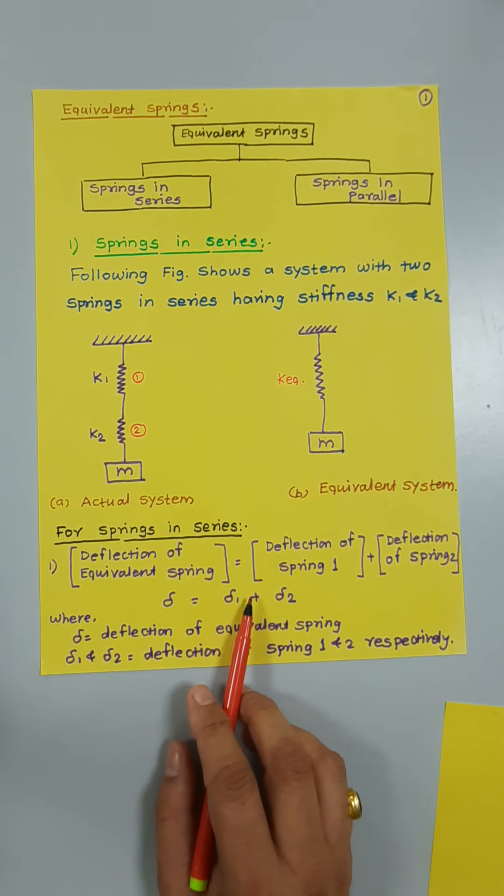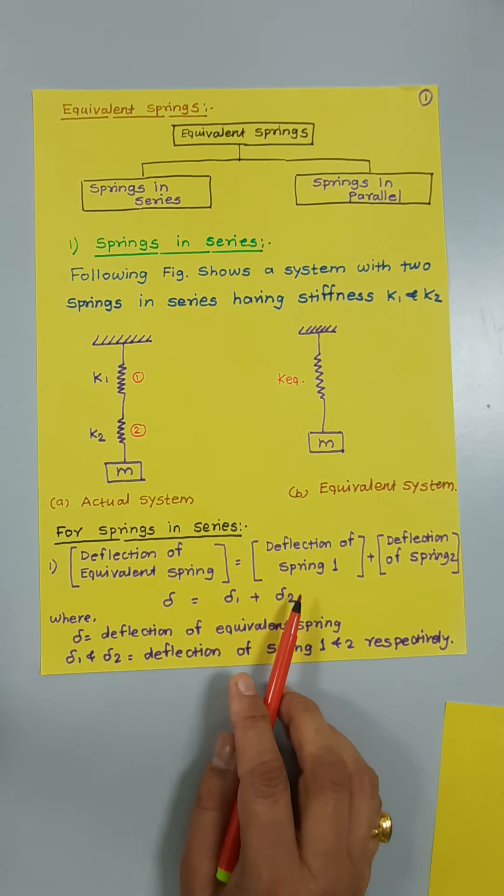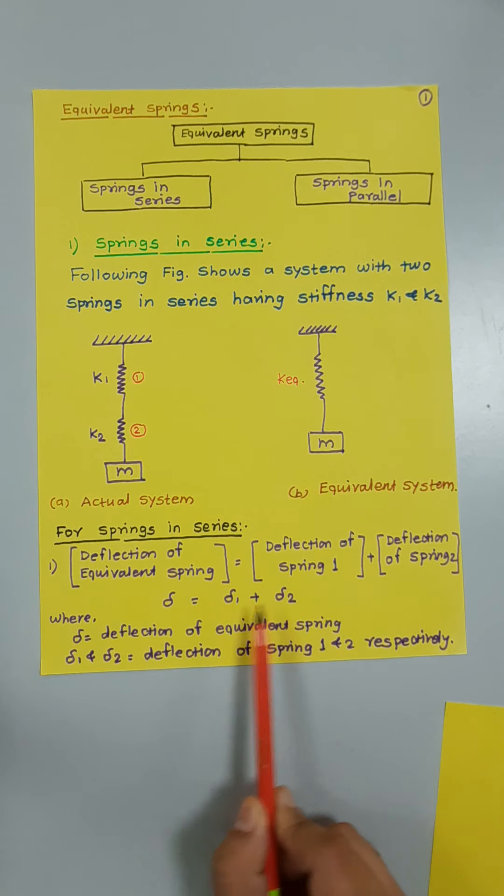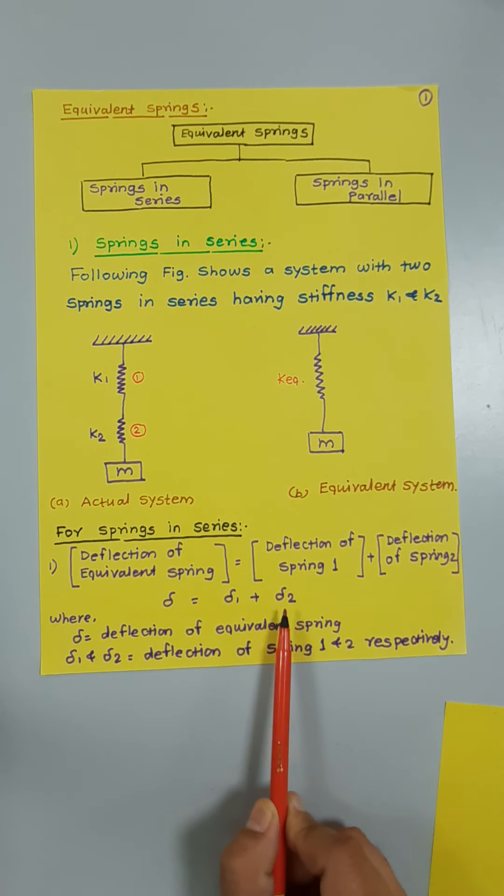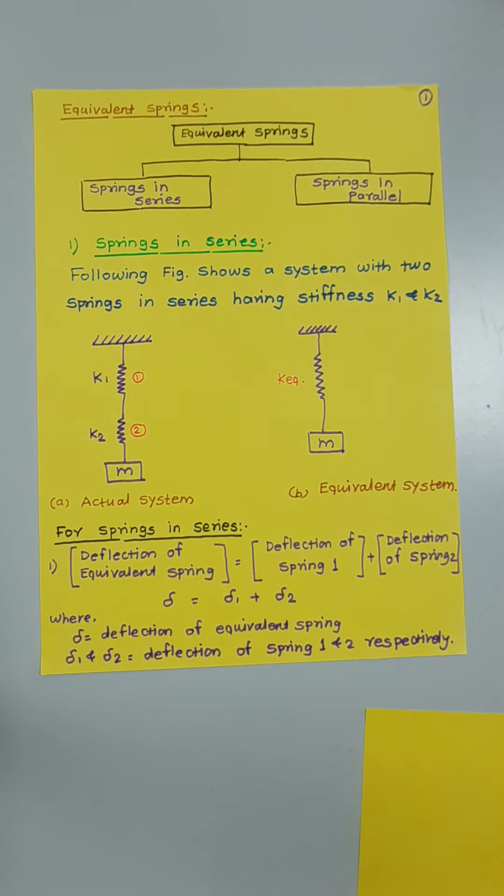If delta is the deflection of the equivalent spring, then delta one and delta two are the deflections of spring one and spring two respectively. So the deflection of the equivalent spring is the summation of the deflections of the two springs: delta = delta one + delta two.